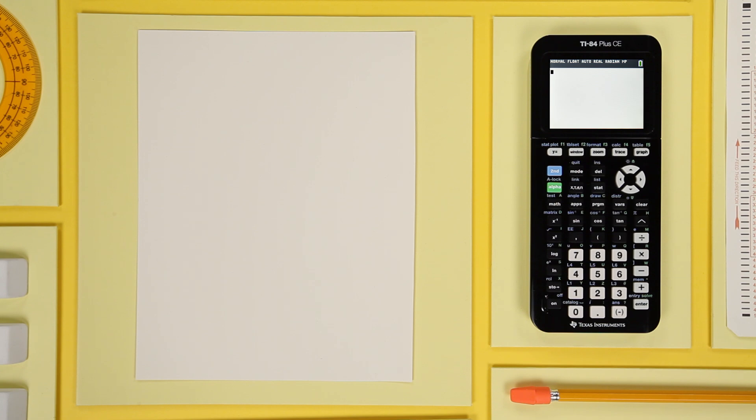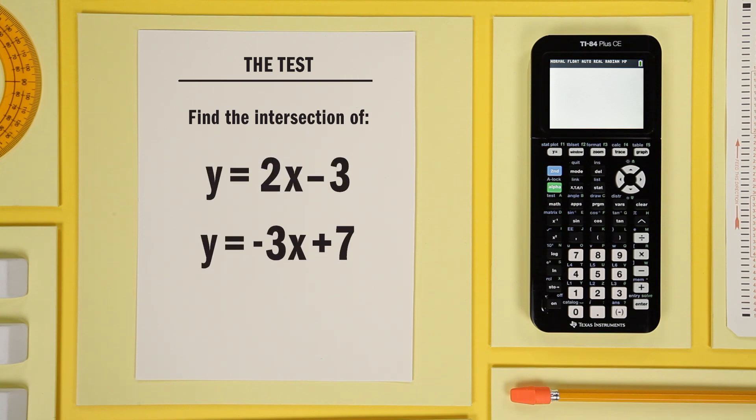I'm going to show you fast, simple, and accurate ways to locate points of intersection on graphs. Let's find the intersection of the graphs of y equals 2x minus 3 and y equals negative 3x plus 7.